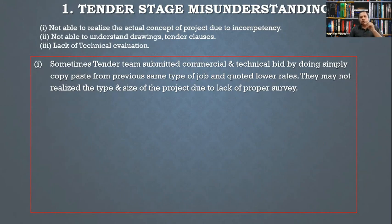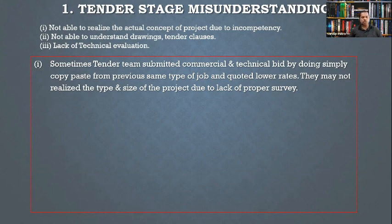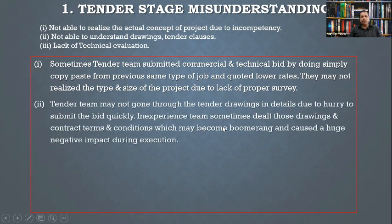For example, in one airport project, there was a package called a titulator. This was mentioned in the contract document, but the tender team did not go through it properly and may not have known that system. At a later stage, there was a huge cost impact because they had not included that package's value in their budget — the project went negative. This kind of oversight happens because tender teams rush to submit bids quickly without reviewing tender drawings in detail.